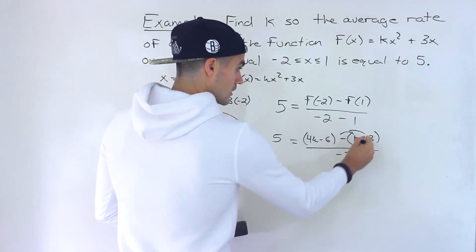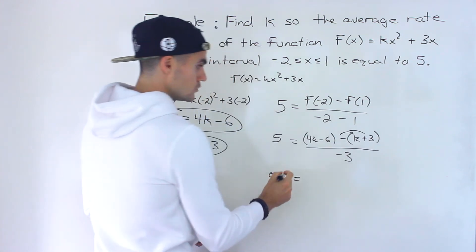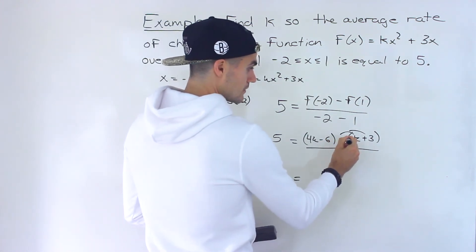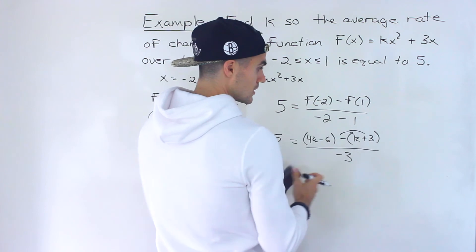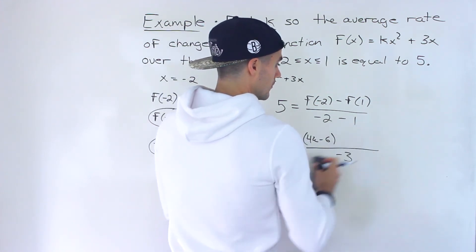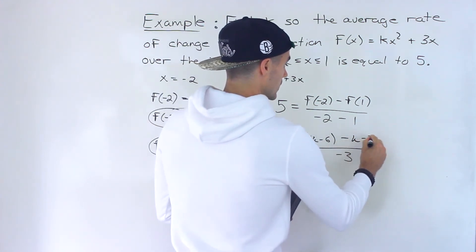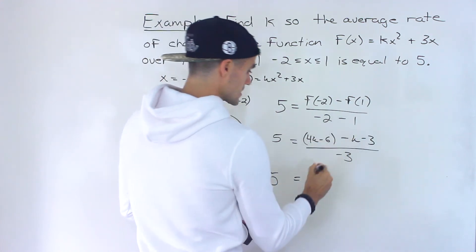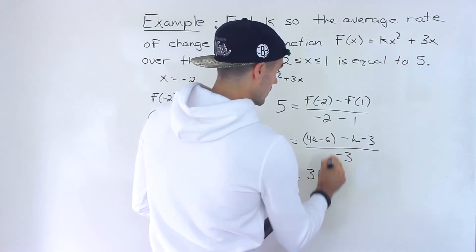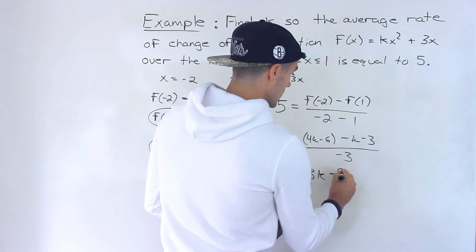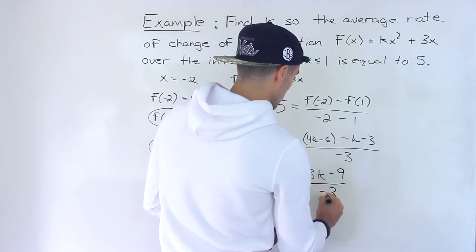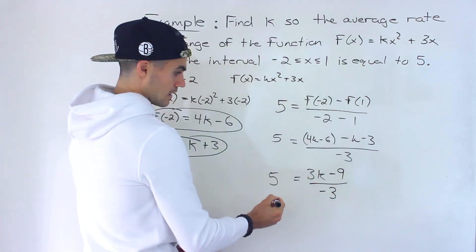Now notice we have an equation and we just have to solve for that k value. We can simplify the numerator. Notice that minus bracket k plus 3 would end up being minus k minus 3. This bracket can just go away. So 4k minus k would give us 3k. Minus 6 minus 3 would give us minus 9, all over negative 3.